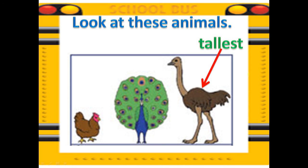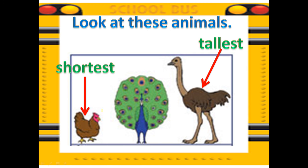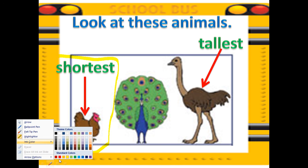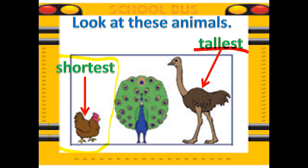Do you get the lesson now, KGs? Look at this animal I will be pointing next — I'm pointing to the chicken. The arrow is pointing to the chicken. If the ostrich is the tallest, what could be the chicken? The chicken would be the shortest. Our lesson is shortest. Among these three animals, the chicken is the shortest. The opposite of tallest is shortest. Say: shortest.